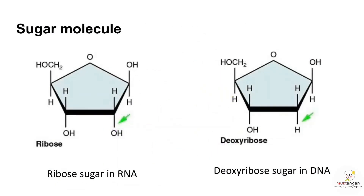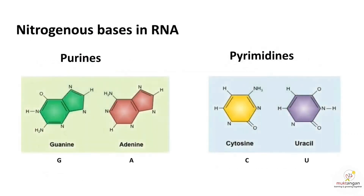RNA nucleotide consists of a ribosugar, unlike DNA, which has a deoxyribosugar. RNA also has two types of nitrogenous bases: purines and pyrimidines. An important thing to remember is RNA does not have the pyrimidine thymine — thymine is replaced by uracil.